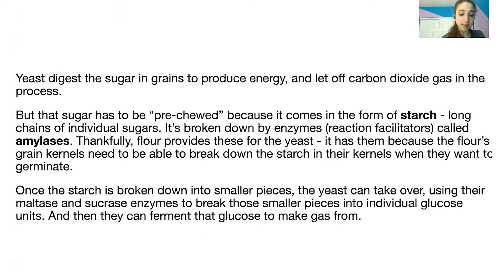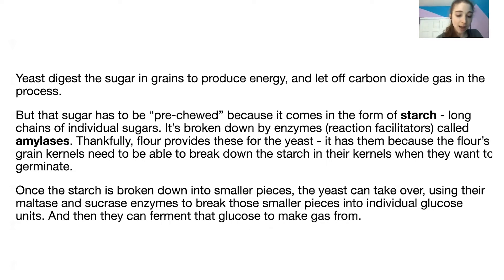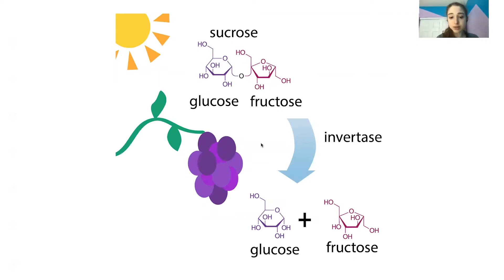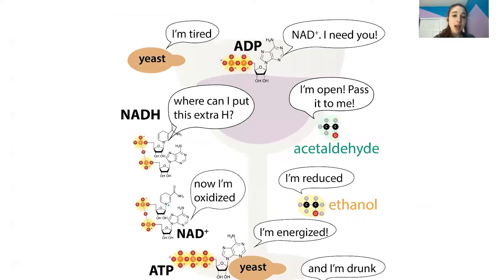Yeast use that glucose to ferment and make gas. In wine, yeast use an enzyme called invertase to break down sucrose — which is glucose plus fructose — into individual glucose and fructose units, which then go through the fermentation process. That covers biological leavening agents.